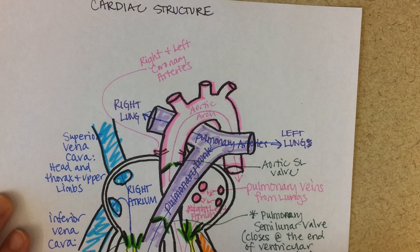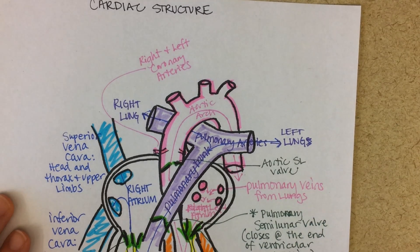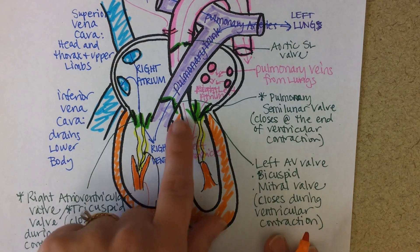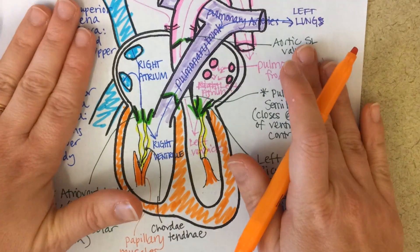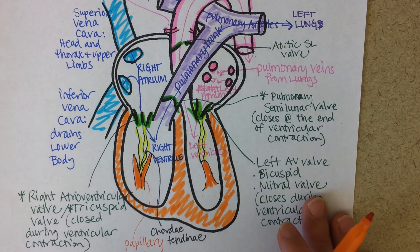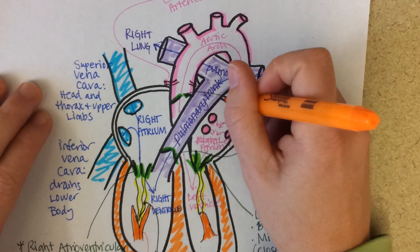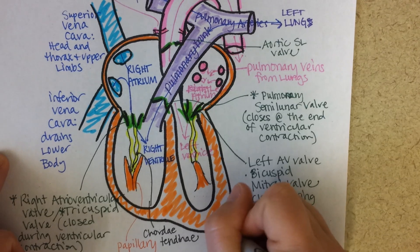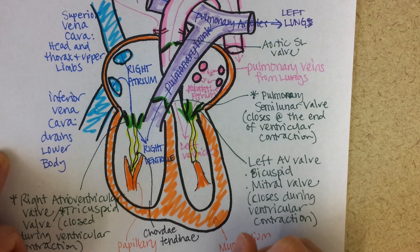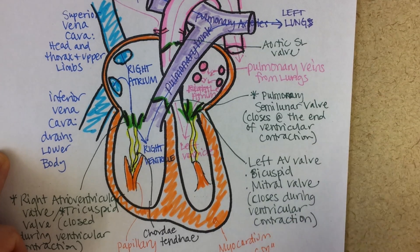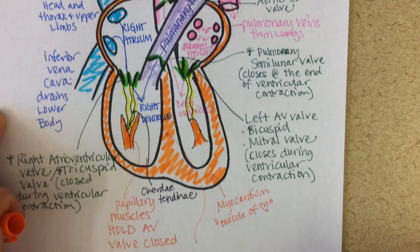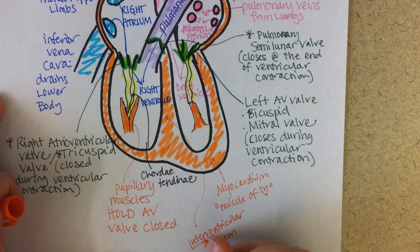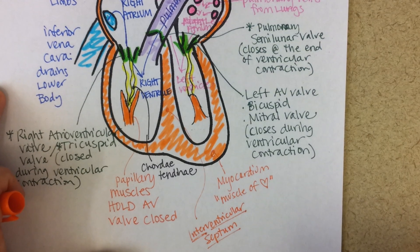The muscle of the heart is called myocardium — myo means muscle, cardio means heart. The right ventricle has a thinner muscle wall because it only has to pump blood a few inches to the lungs, whereas the left ventricle must pump blood all the way up to the brain and down to the toes, so it's bigger and stronger. The atria also have thin muscular walls. In the middle is the interventricular septum — also muscle — which is the wall between the two ventricles (inter means between, septum means wall).